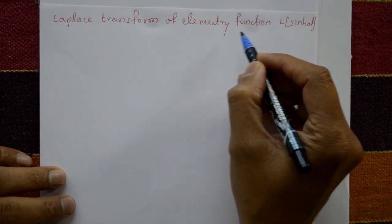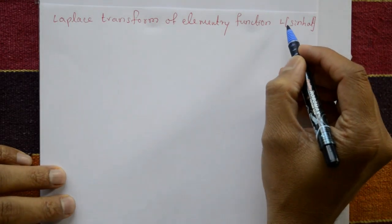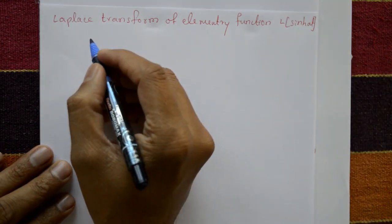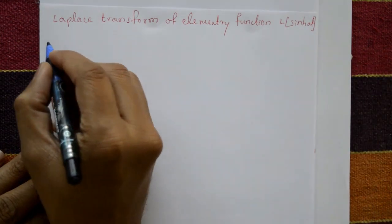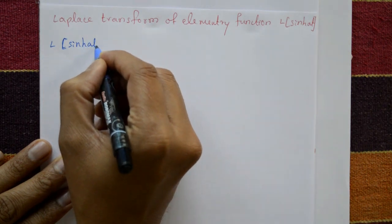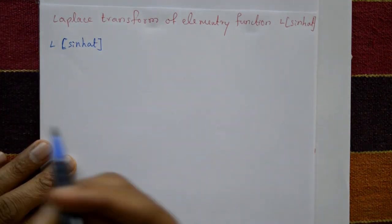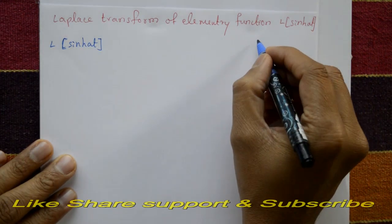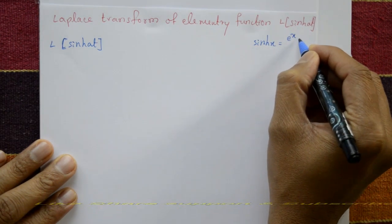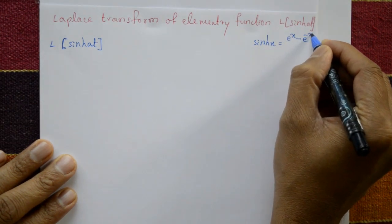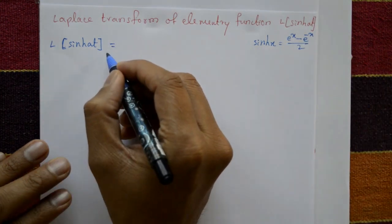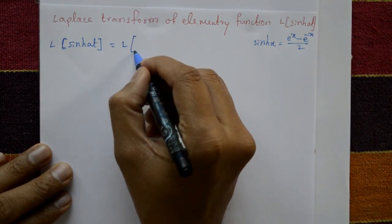Laplace transform of elementary function: Laplace of sinh(at). Now, sinh(at) is a hyperbolic function. The standard formula is sinh(x) = (e^x - e^(-x)) / 2.